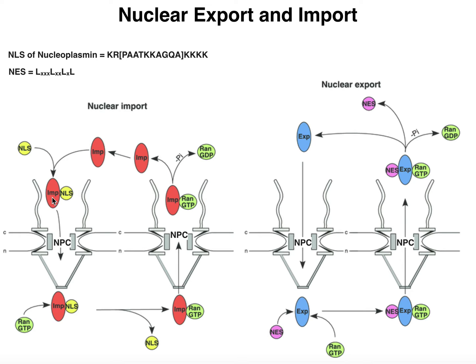Importin is going to bind to the NLS of a particular protein that needs to go into the nucleus — let's say a transcription factor. That importin-NLS complex, with the remainder of the protein attached, is going to move through the nuclear pore complex and into the nucleoplasm, which is basically the inside of the nucleus.